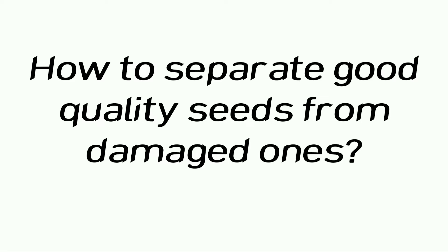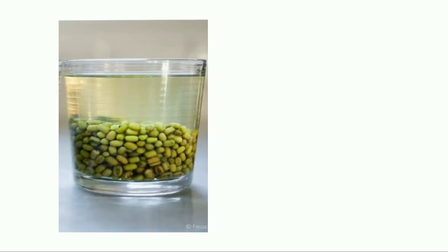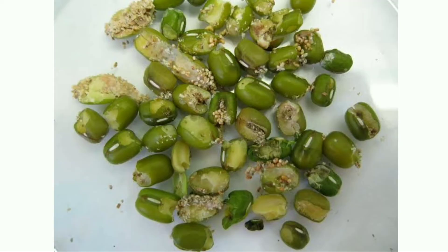In order to know this, let us perform a small activity. Take a glass of water and a handful of moong seeds. Put these moong seeds in the glass of water, stir well, and let it rest for some time. You will observe that there are some seeds floating on the water. This is because damaged seeds are hollow from inside and thus lighter, and therefore they float on water.